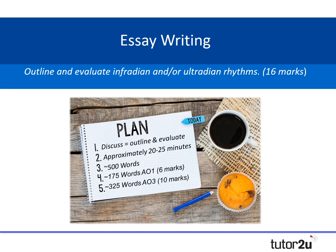Let's imagine you've got the following essay question: outline and evaluate infradian and/or ultradian rhythms for 16 marks. The usual rules apply — we've got approximately 20 minutes to write an essay. We might at an upper word limit be looking at writing about 500 words, of which around 175 might be our knowledge and 325 might be evaluation.